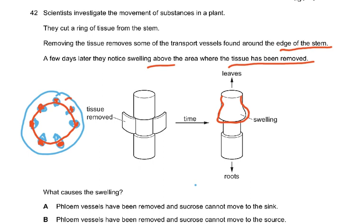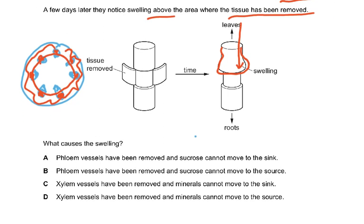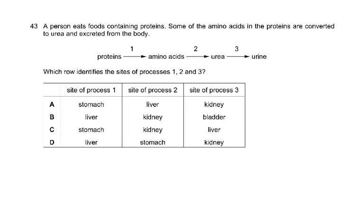They've cut the phloem, so sucrose coming from the leaves can't go down. The phloem vessels have been removed and sucrose cannot move to the roots. Remember, the roots are the sink — they cannot photosynthesize. Source is the provider; sink is the user. That is why the answer is A.